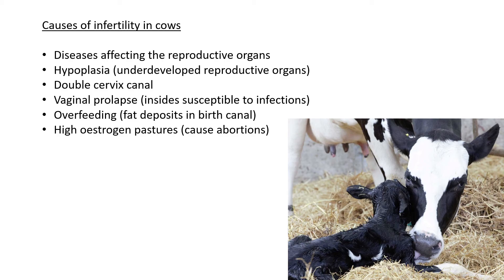Lastly, high estrogen levels in pasture lands can also lead to abortions, because estrogen actually stops pregnancy — it is one of those counteractive hormones. Farmers must ensure that whatever pasture the cow is eating does not have high estrogen content, as certain plants have high estrogen levels and this is very bad for the cow's reproductive health.